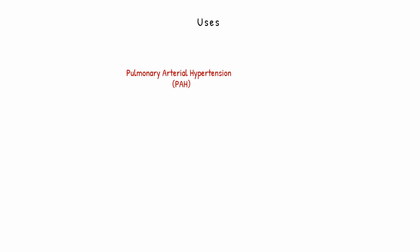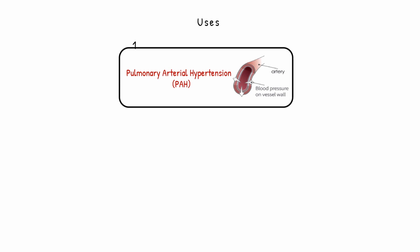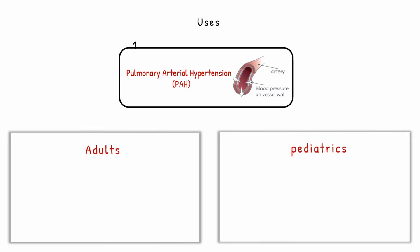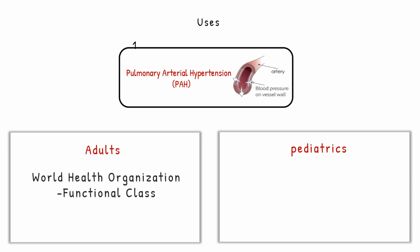The use of Bosentan is pulmonary arterial hypertension, where blood pressure is exerted on the pulmonary artery. Bosentan can be given to adults as well as pediatrics. The World Health Organization functional classification classifies the severity of pulmonary arterial hypertension from class 1 to class 4, with 1 being mild and 4 being severe — Bosentan can be given to any class. For pediatrics, it can be given to any child aged greater than or equal to 3 years.